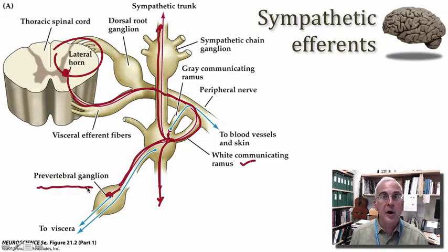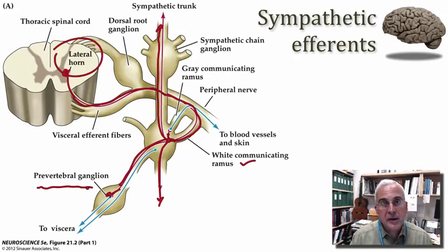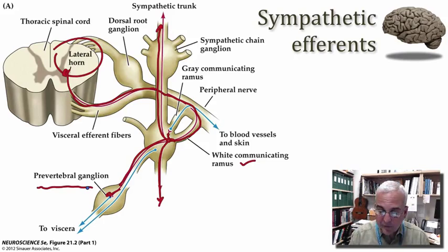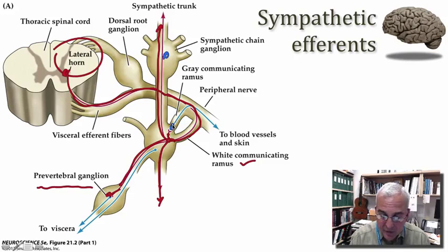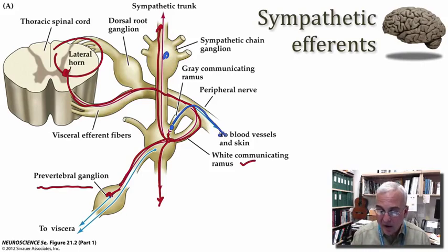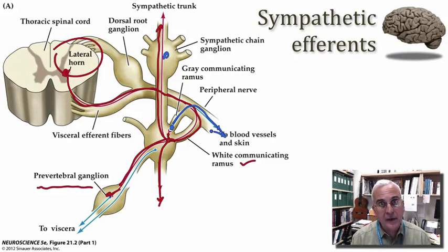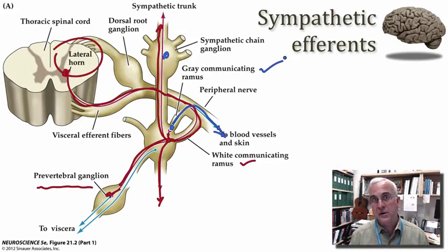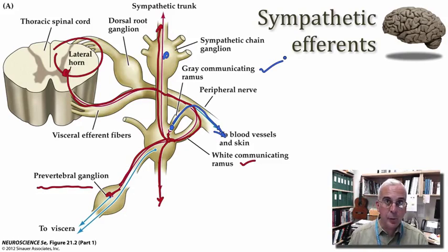Pre-vertebral ganglia tend to be more common in the lower part of the viscera in the abdominal cavity. These preganglionic axons interact with a postganglionic neuron found in one of these collections of cell bodies. These ganglionic neurons give rise to an axon that leaves the sympathetic trunk, rejoins the spinal nerve, and goes out to supply some visceral target. This little branch reconnecting the ganglion to the spinal nerve is called the gray communicating ramus, because these axons are unmyelinated or only very poorly myelinated — they don't have the same glistening appearance as the white communicating ramus.